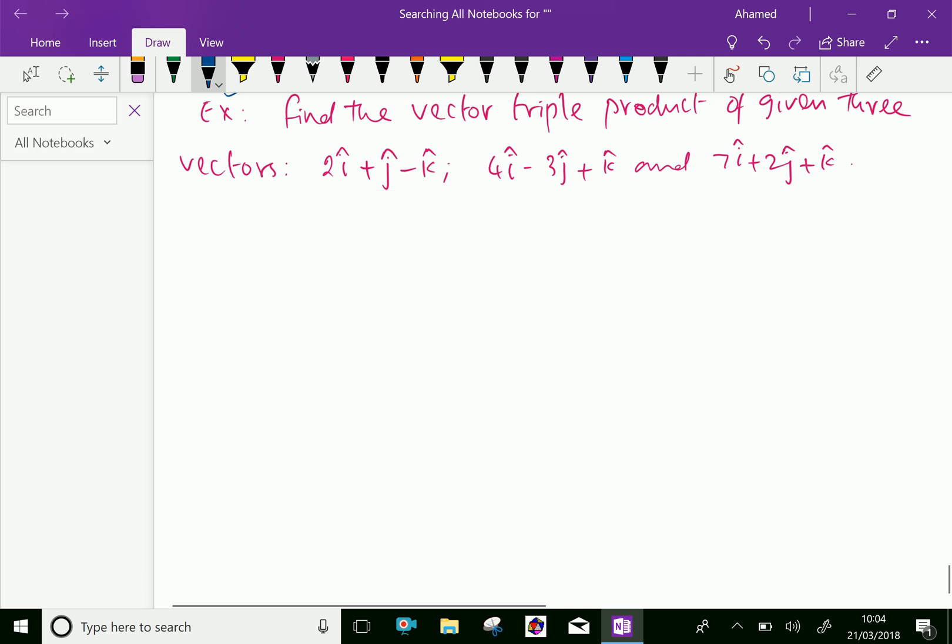Now, let vector a equal 2i plus j minus k, vector b equal 4i minus 3j plus k, and vector c equal 7i plus 2j plus k.